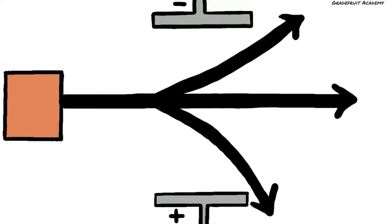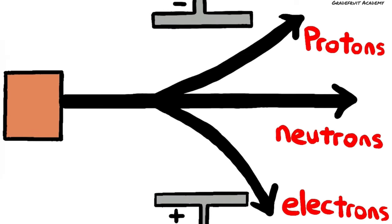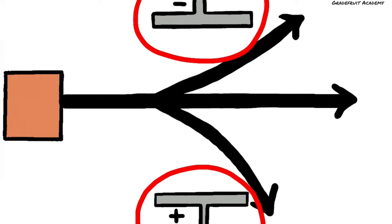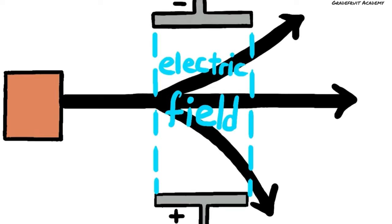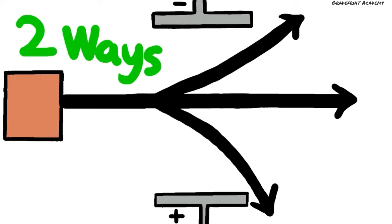Each arrow represents either a beam of protons, neutrons, or electrons when passed through two positively and negatively charged plates. These two plates create an electric field, which will cause the protons, neutrons, and electrons to behave in two ways: being deflected in different directions and with different angles.